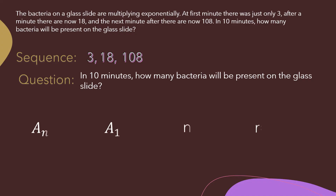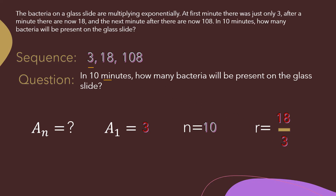The last term is unknown. The first term a sub 1 is 3. Since we are asked about 10 minutes, n equals 10. The common ratio r is found using the second term divided by the first term: 18 divided by 3, so r equals 6.